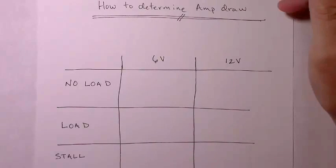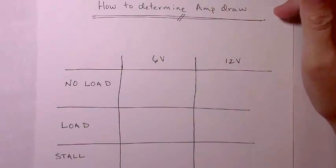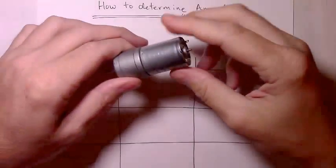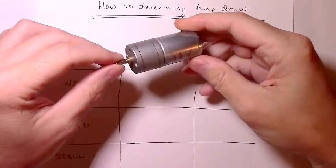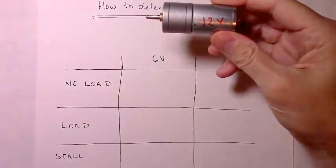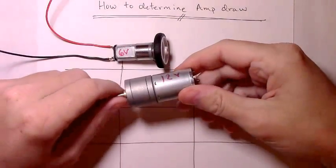Welcome. In this video we'll discuss how to determine the amp draw of small brushed DC motors. We'll look at a 12 volt motor and a 6 volt motor.